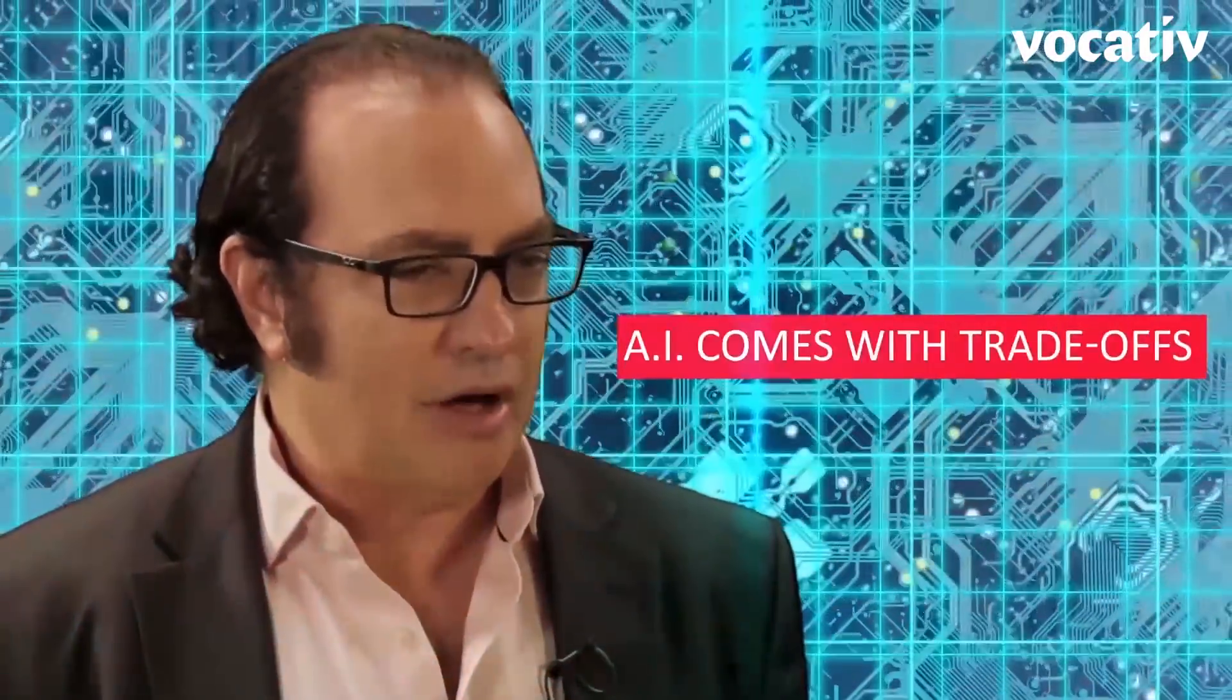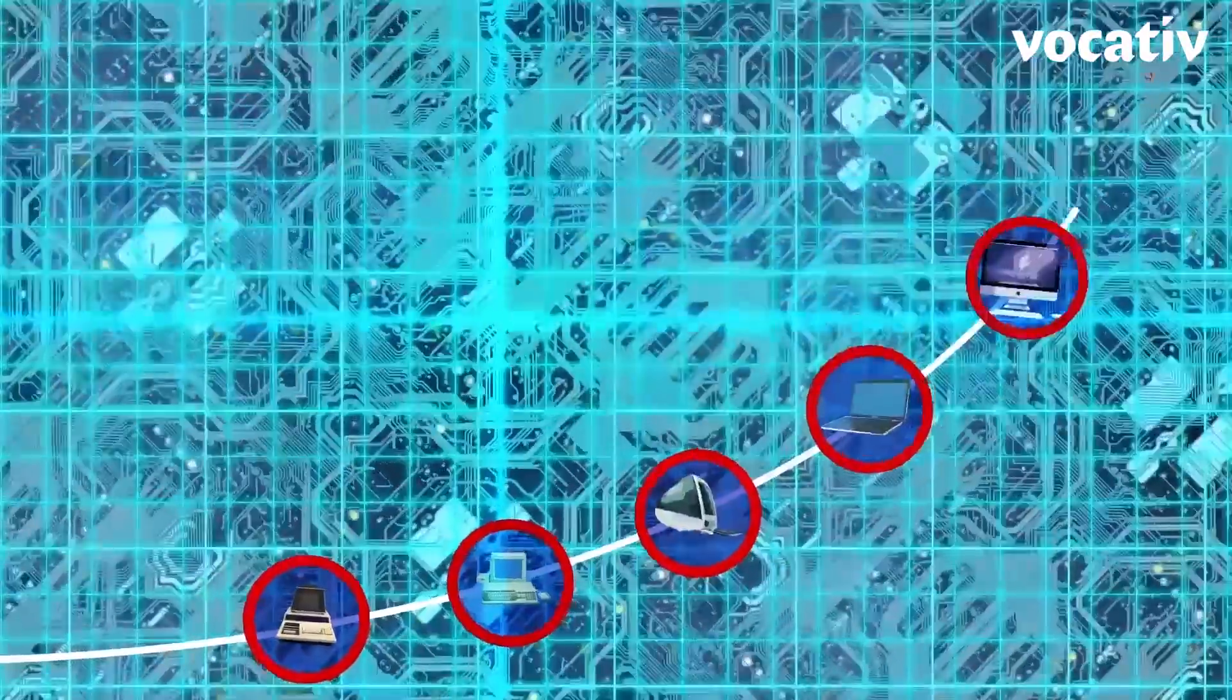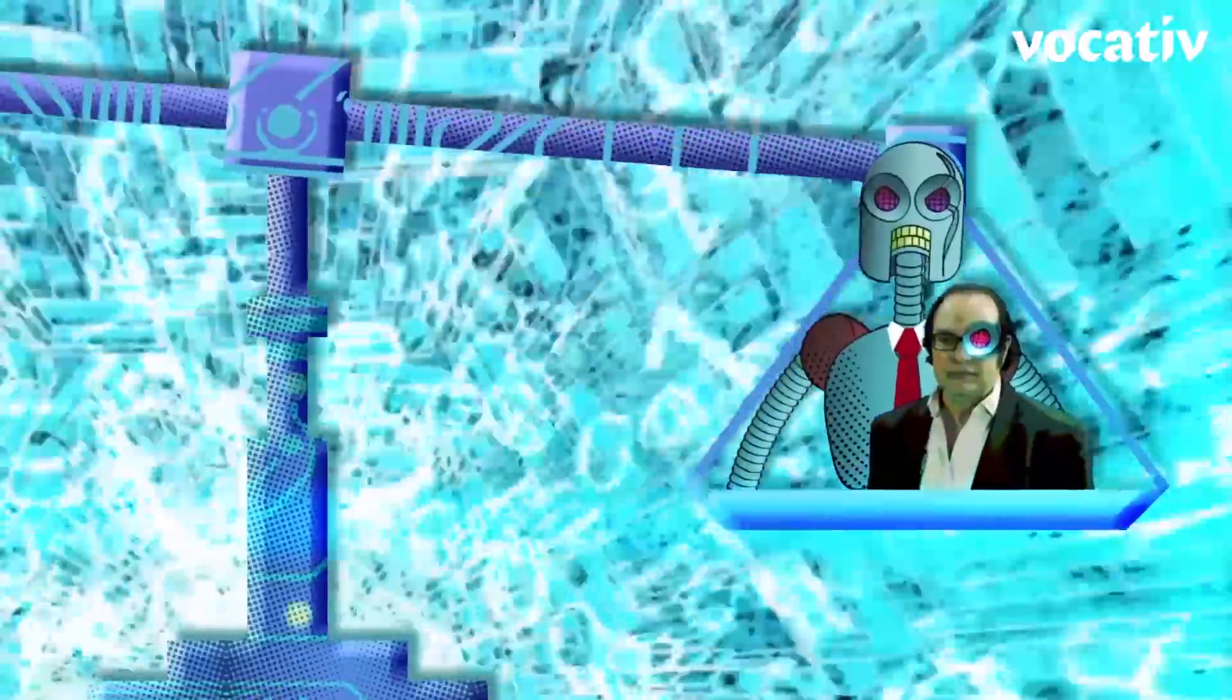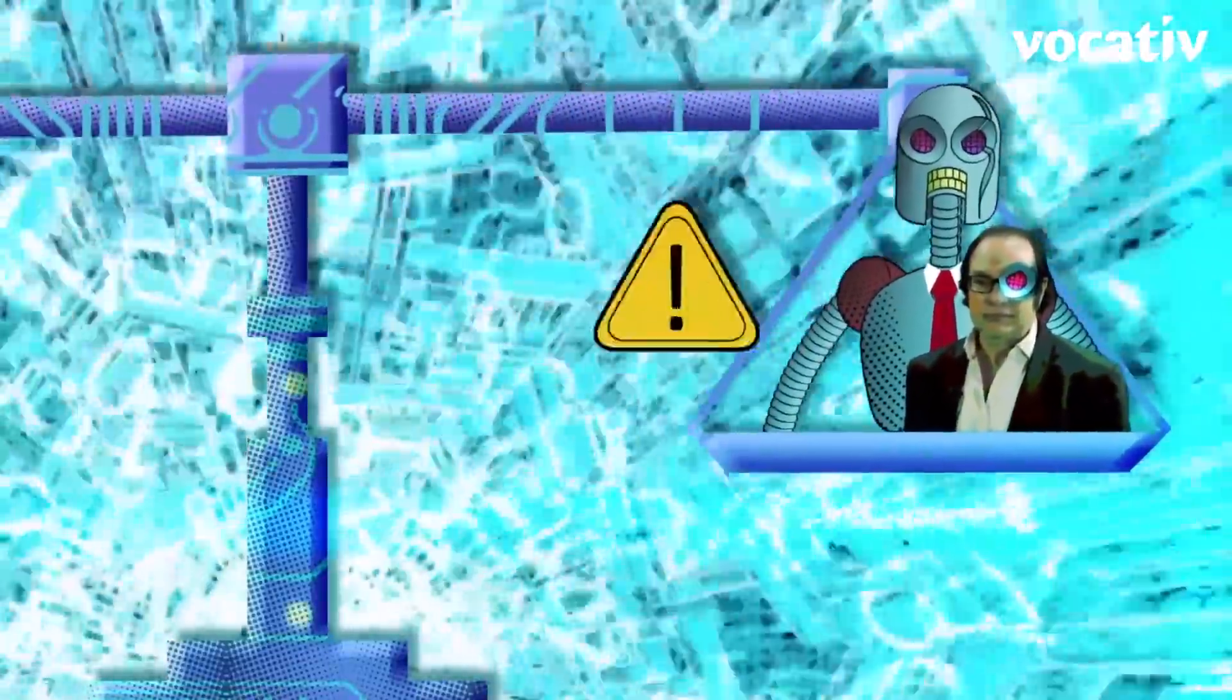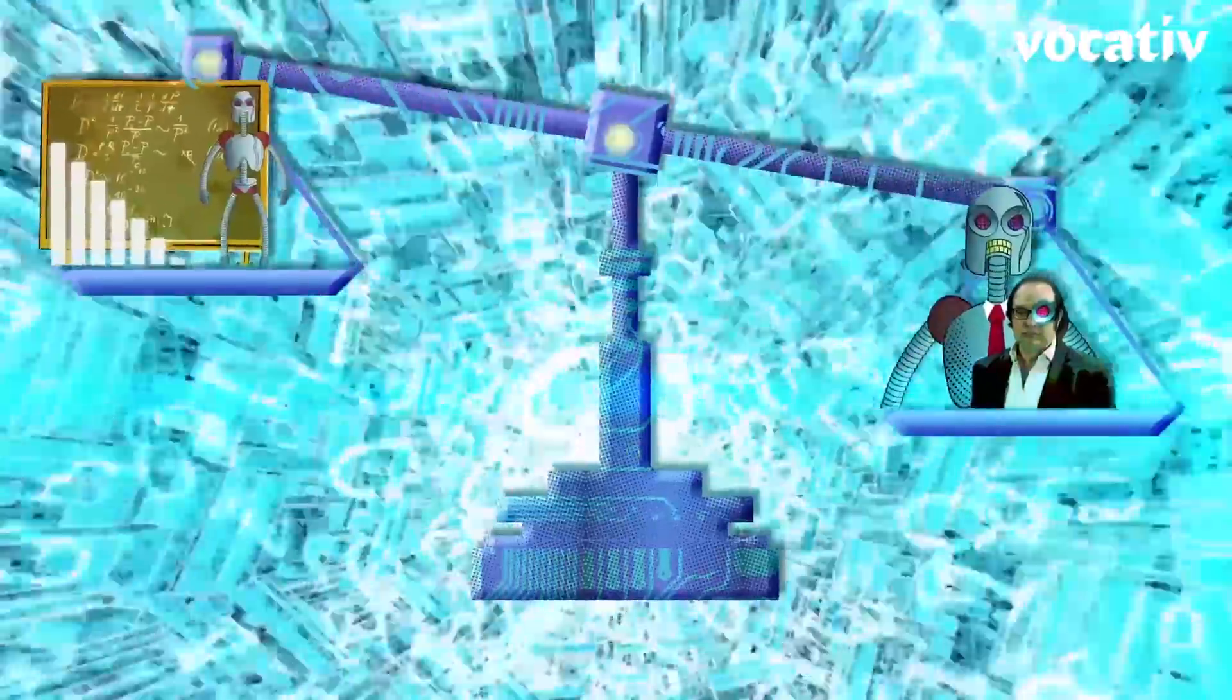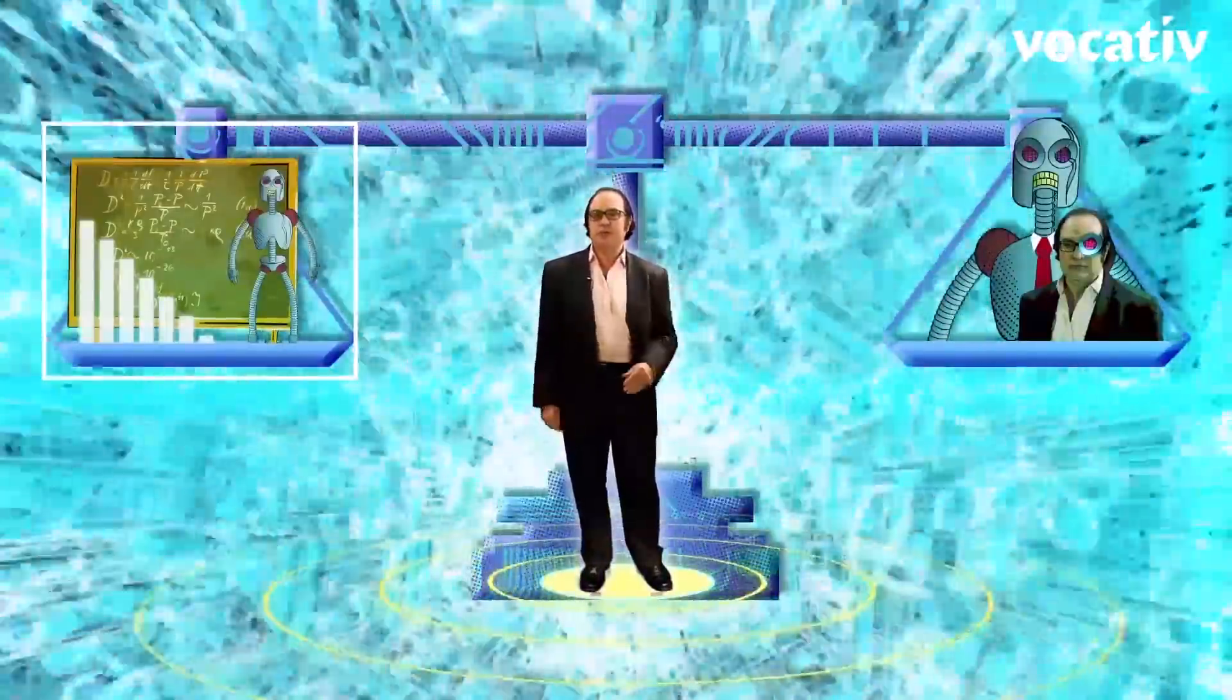AI comes with trade-offs, like all exponential technologies. Yes, better, faster, cheaper problem solving, but also job disruption and human identity change, and some risk amplification and reduction. And we need to capture the benefits and proactively manage the risks.